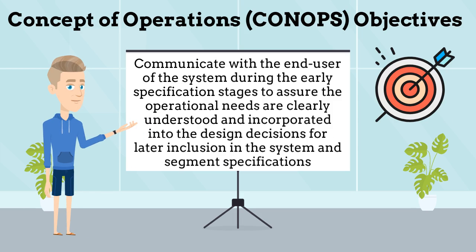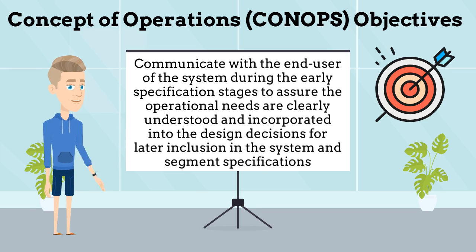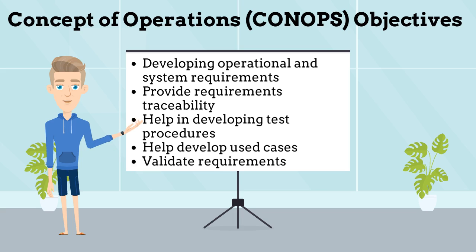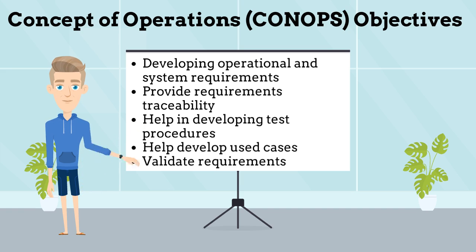The main objective of a CONOPS is to communicate with the end-user of the system during the early specification stages to assure the operational needs are clearly understood and incorporated into the design decisions for later inclusion in the system and segment specifications. Besides the main objective of communication, a CONOPS also helps in developing operational and system requirements, provide requirements traceability, help in developing test procedures, help develop use cases, and finally, validate requirements.